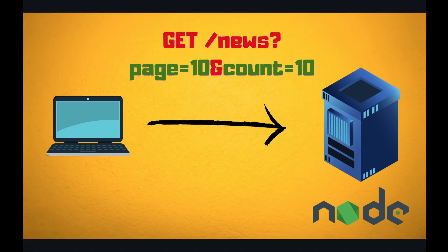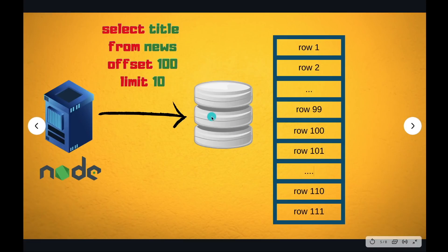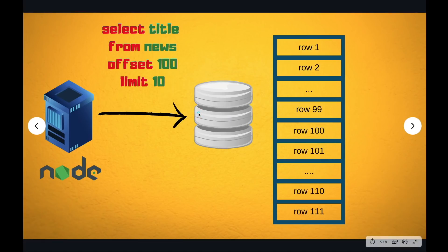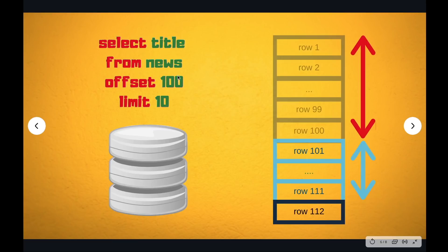Let's say you have a web application with an API that supports paging. Your user wants to request 10 news articles on page 10, performed via a simple GET request. The API server receives the request and builds a SQL query to send to the database — hopefully over a pool of already-established TCP connections. Page 10 translates to OFFSET 100, assuming each page has 10 records.